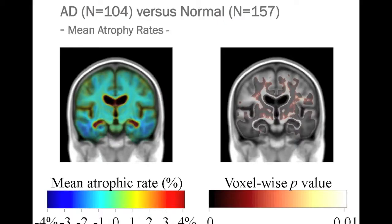If you combine this data from a large number of people — in this case just over 100 people with Alzheimer's disease — and compare similar rates of loss from healthy elderly people with no symptoms of cognitive decline, you can make a map showing which parts of the brain are losing tissue the fastest. On average, in this group of Alzheimer's patients, the temporal lobes — areas involved in learning and memory — are losing brain tissue at about 3 or 4 percent per year. Some areas are losing tissue but not as fast, and the fluid-filled ventricles in the center are expanding at about 2 to 3 percent per year.